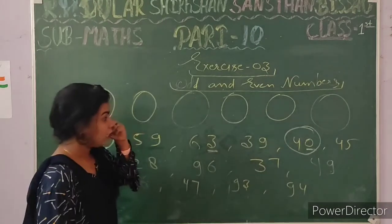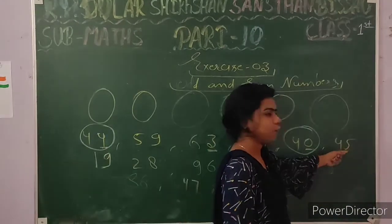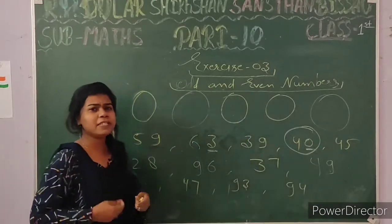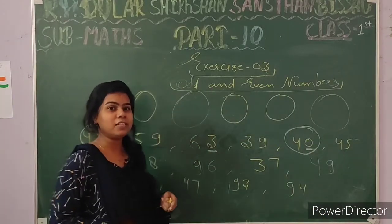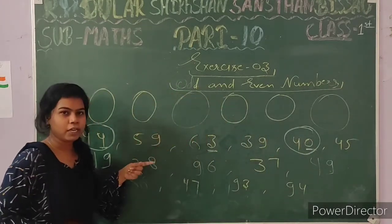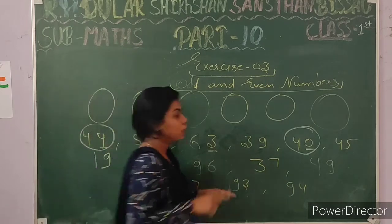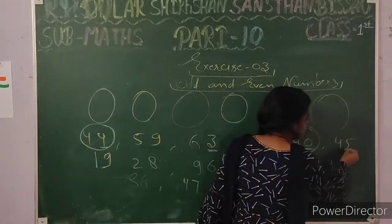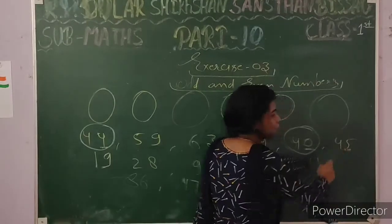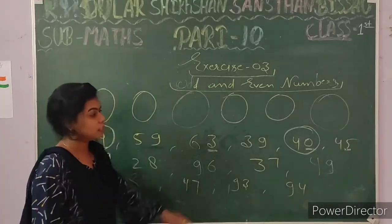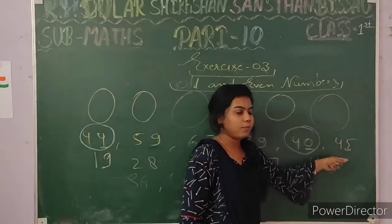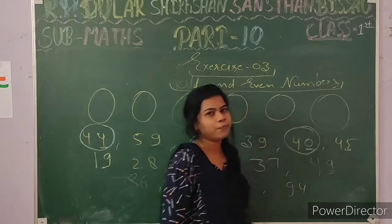For 45 — the ones digit is 5. Students, always remember which one is the ones digit and which one is the tens digit. I told you at the start of the chapter: ones, tens, hundreds. The ones digit of 45 is 5, which is not 0, 2, 4, 6, or 8, so we cannot say it is an even number — this is an odd number. So we cannot encircle 45. For 19 — this is also not an even number.